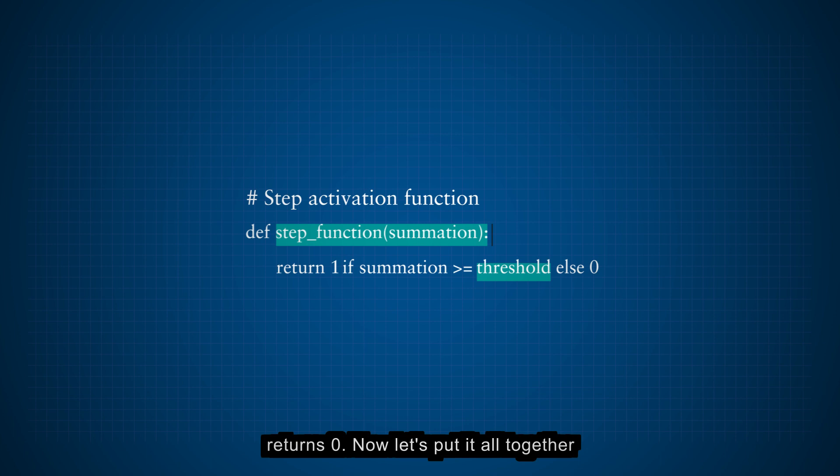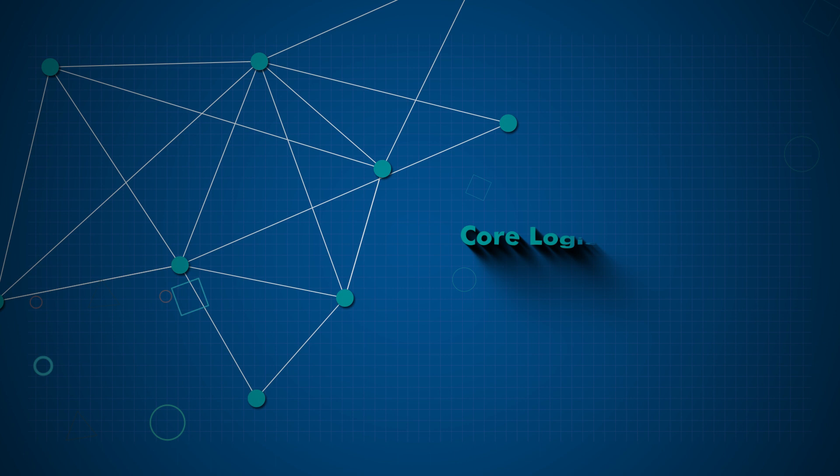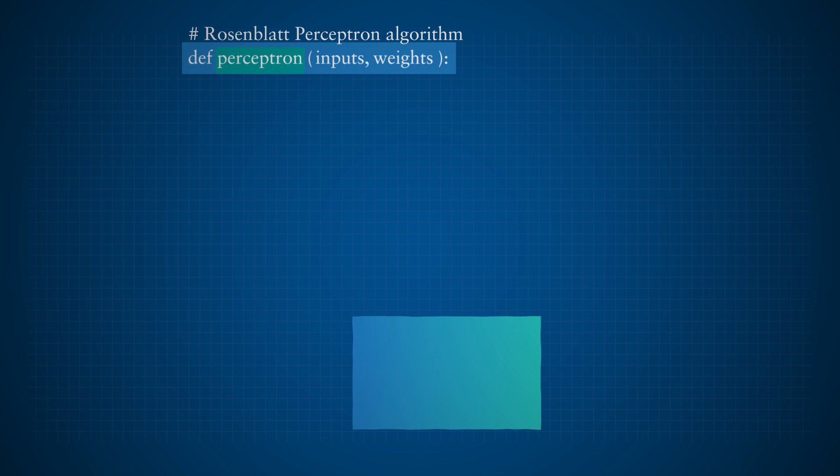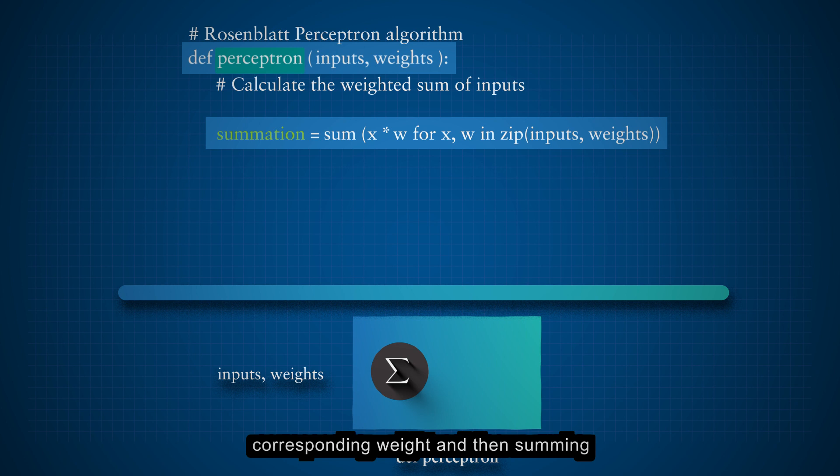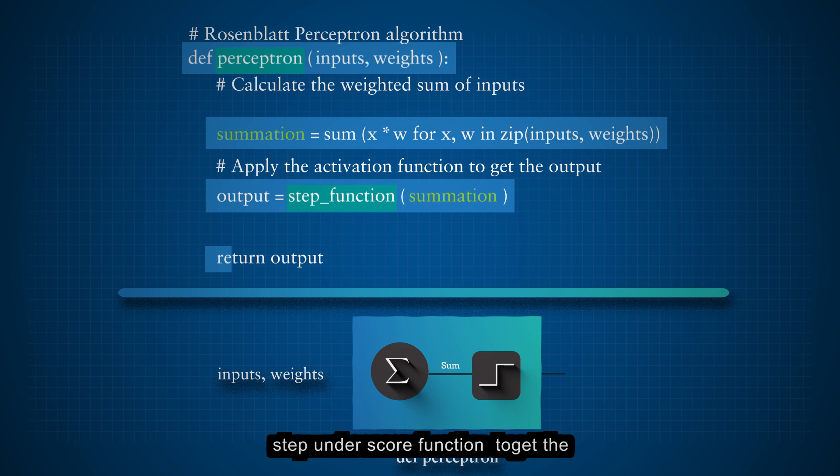Now, let's put it all together and implement the core logic of the Rosenblatt perceptron. The perceptron function takes the inputs, our data features, and weights as input. It calculates the weighted sum of inputs by multiplying each input with its corresponding weight and then summing them up. Next, it passes this summation to the activation function, step_function, to get the output of the perceptron, which will be either 0 or 1.